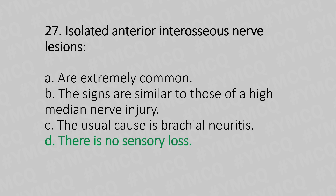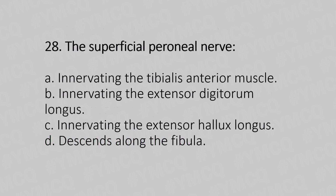Now let's move to question number 28. The superficial peroneal nerve. Option A, innervates the tibialis anterior muscle. Option B, innervates the extensor digitorum longus. Option C, innervates the extensor hallucis longus. Option D, descends along the fibula. And the answer is Option D, descends along the fibula.